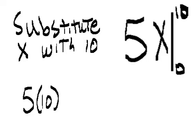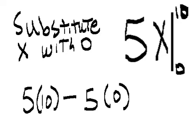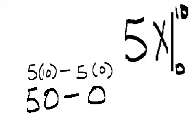5 times 10 minus 5 times 0 becomes 5 times 10 is 50 minus 5 times 0, that's 0. 50 minus 0, that is 50.